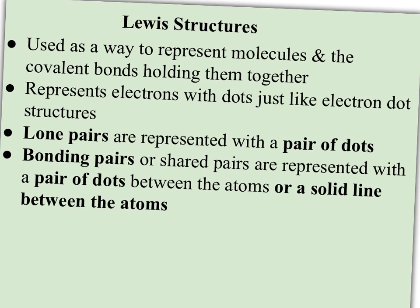Lewis structures are a way to represent molecules and the covalent bonds holding them together. We adapt the electron dot diagrams we've learned, and now we designate which pairs of electrons are lone pairs and which ones are bonding pairs. Lone pairs are shown with a pair of dots. The bonding pair can either be shown as a pair of dots between the atoms, or as a solid line — a solid line connects the two electrons to each other, making it clear which are lone pairs and which are bonding pairs.